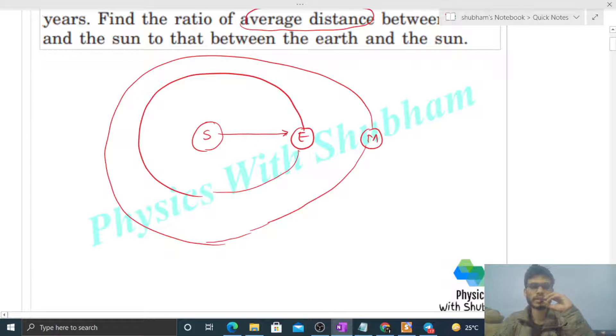Let's say the radius of orbit of the Earth is RE and radius of orbit of Mars is RM. So you just have to find out the value of RM by RE. What is given is the time period of Mars is 1.88 years and the time period of Earth we already know is one year.